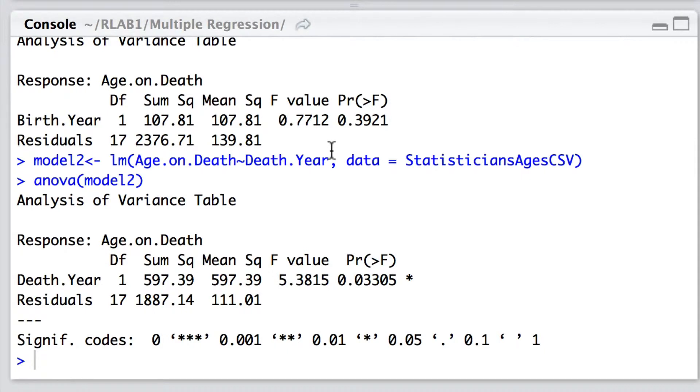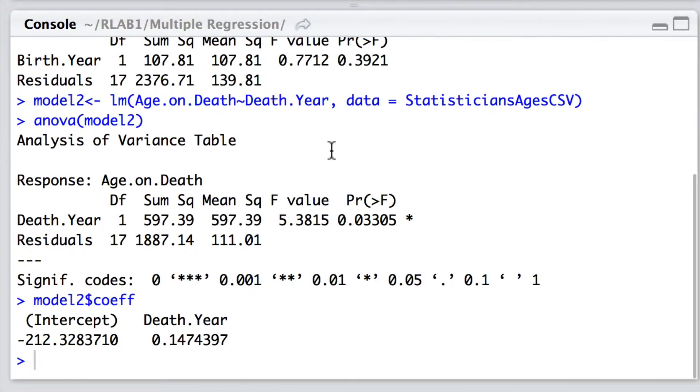So we have evidence that there is a relationship between death year and age on death. What way does it look? Well we can simply ask for the coefficients and it seems that from the gradient here of 0.147 it appears that the age to which these statisticians were living tends to increase with their year of death.